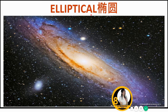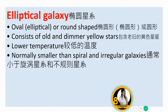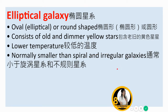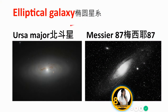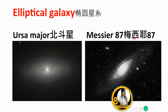Next, elliptical galaxies have an elliptical or round shape. They consist of old and dimmer yellow stars with lower temperature. Elliptical galaxies are normally smaller than spiral and irregular galaxies. Two famous examples are the 2MASS galaxy and Messier 87.